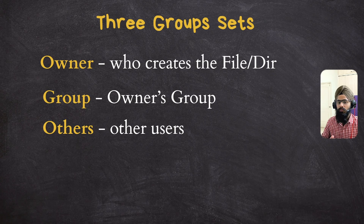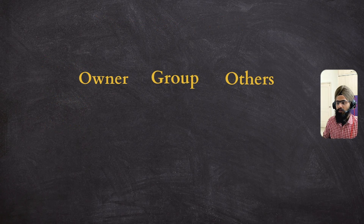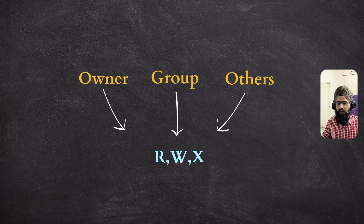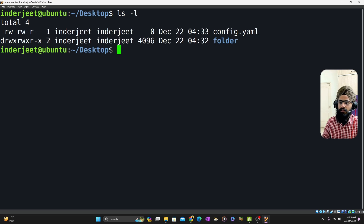If you assign read, write, or execute permission to a group, then all the members belonging to that group will get the same permission. You don't have to assign permissions to individual users. There is also 'others', which means users not belonging to the group. The notation is fixed: r for read, w for write, and x for executable. To check permissions, simply type ls -l and hit enter.